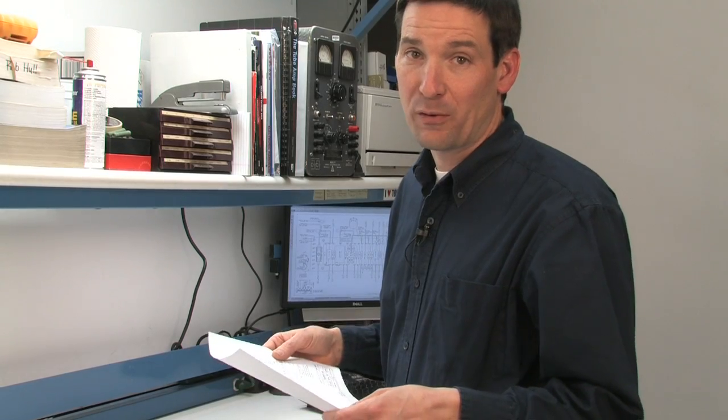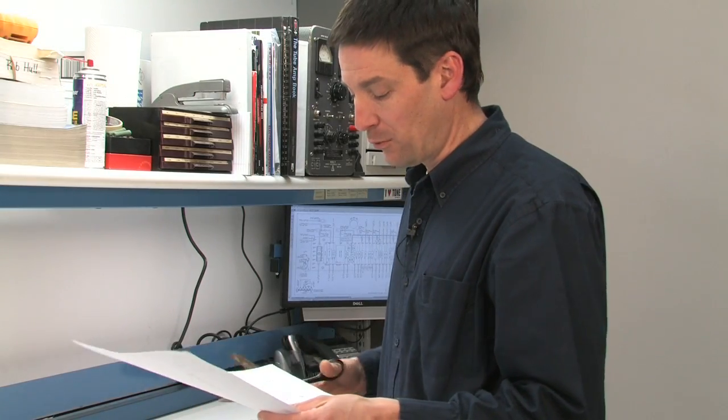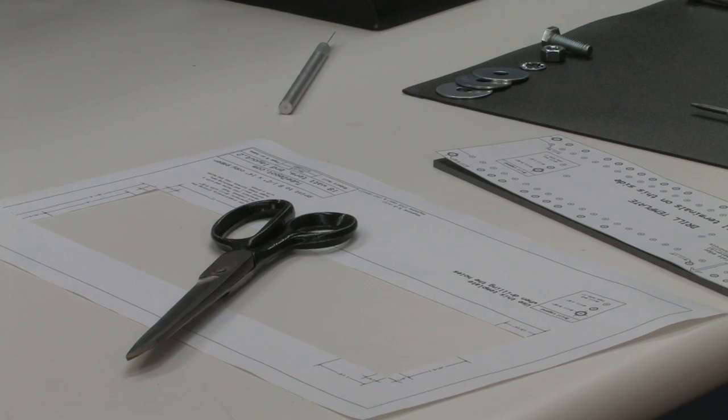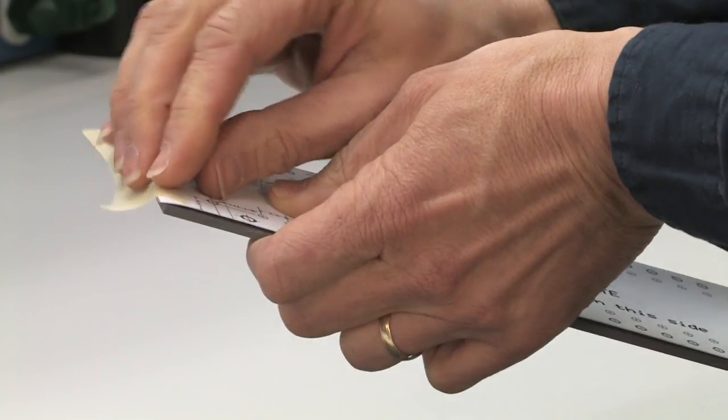Let's take care of the template right now. I'm going to be building a turret board for the 18-watt clone. Here's my template, which you can download on the Tubedepot.com website. The first step in transferring this template to the board is to cut the template out. Once you've got the template cut out, now we're going to tape it.